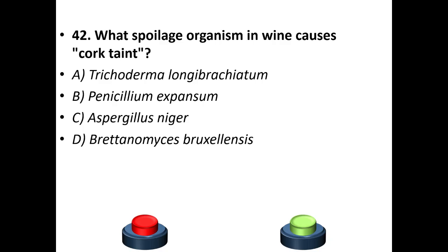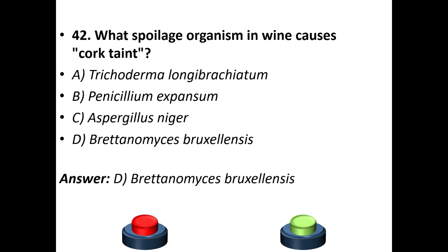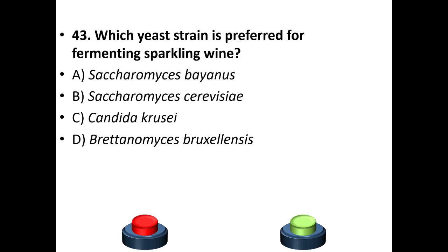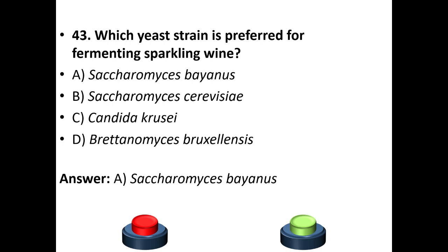Forty-second question: which spoilage organism in wine produces cork taint? A: Trichoderma longibrachiatum. B: Penicillium expansum. C: Aspergillus niger. D: Brettanomyces bruxellensis. Answer is D — Brettanomyces bruxellensis. Forty-third question: which yeast strain is preferred for fermenting sparkling wine? A: Saccharomyces bayanus. B: Saccharomyces cerevisiae. C: Candida krusei. D: Brettanomyces bruxellensis. Answer is A — Saccharomyces bayanus.